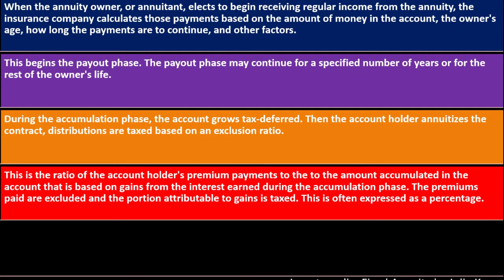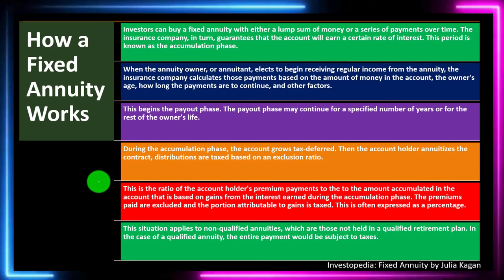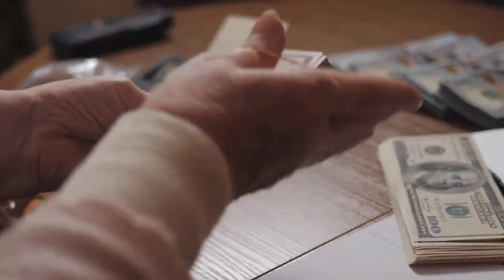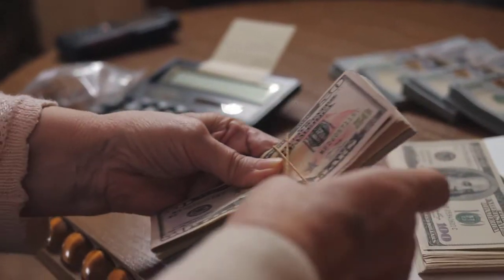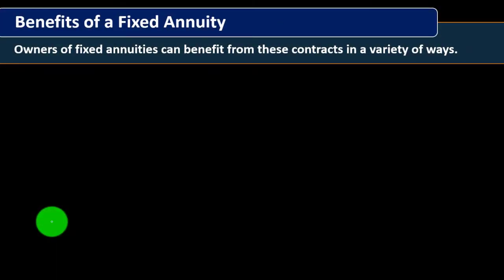The exclusion ratio is the ratio of the account holder's premium payments to the accumulated amount in the account, based on gains from interest earned during the accumulation phase. The premiums paid are excluded from taxes and the portion attributable to gains is taxed. This applies to non-qualified annuities — those not held in a retirement plan. In the case of a qualified annuity, the entire payment would be subject to taxes.